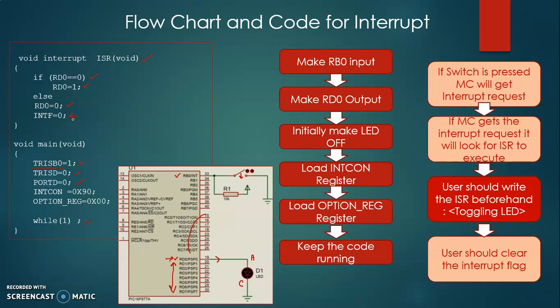With both the main code and the ISR complete, you also need to include the appropriate header file and the code is ready. You can use MPLAB IDE to build the project and generate a hex file from the C code. Before generating the hex file you need to set up the config files and specify the oscillator frequency, then upload the hex code to the microcontroller.